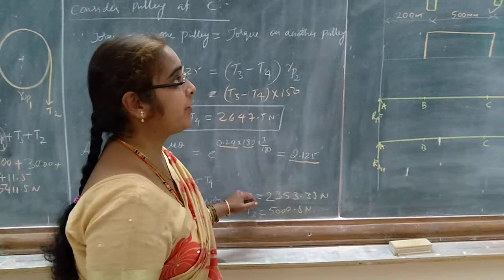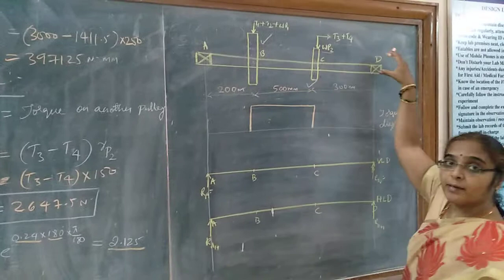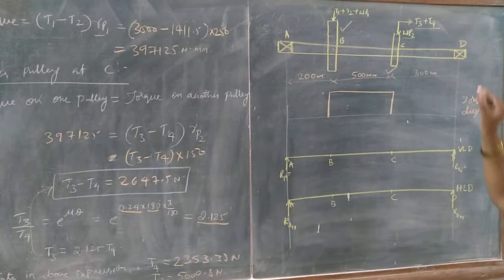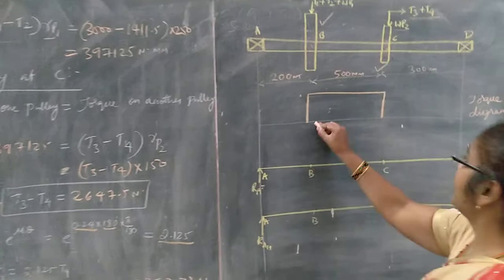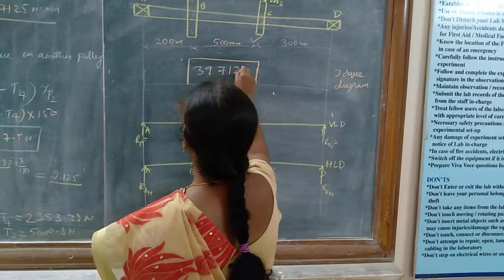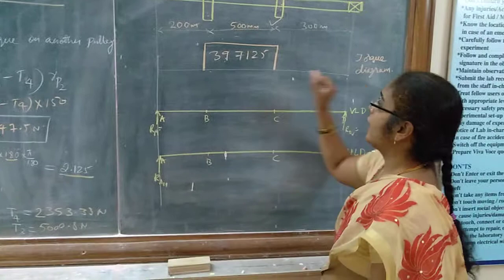Now we have the values of T3 and T4. They act in the horizontal direction because the belt from the motor runs horizontally. So the total horizontal load on the shaft due to the second pulley is T3 + T4. Next, we draw the torque diagram — torque acts between the two pulleys with the calculated magnitude. Then we draw the vertical load diagram and horizontal load diagram to proceed with the shaft design.